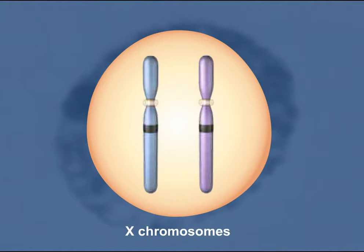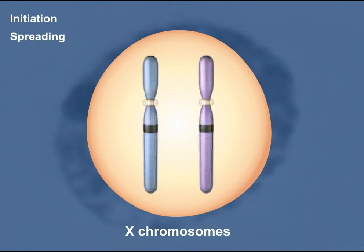In female mammals, this imbalance is prevented by inactivating all but one X chromosome in all somatic cells. X-inactivation can be divided into three phases: initiation, spreading, and maintenance.